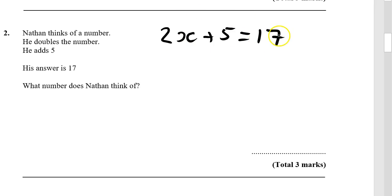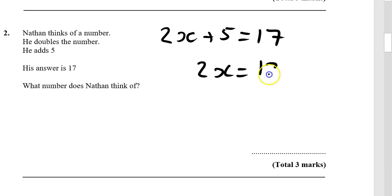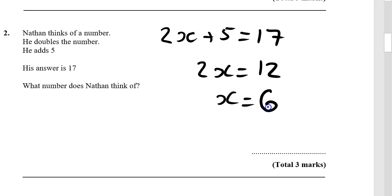Now we just need to work backwards, so we take away the 5, which gives us 12. Basically, 12 add 5 is 17. And because he doubles it, the actual number he is thinking of is 6. So your answer is 6.